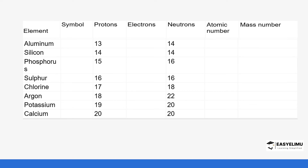Now let's get the atomic number and mass number of specific elements from a table. Aluminium has the symbol Al and has 13 protons, so its atomic number is 13. In a neutral aluminium atom we also have 13 electrons. Taking 13 protons plus 14 neutrons gives us a mass number of 27.